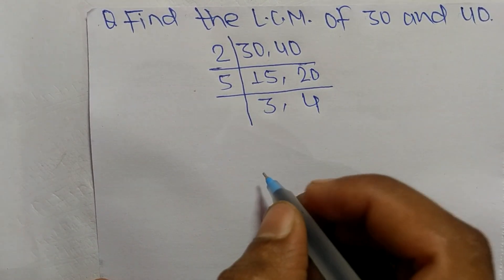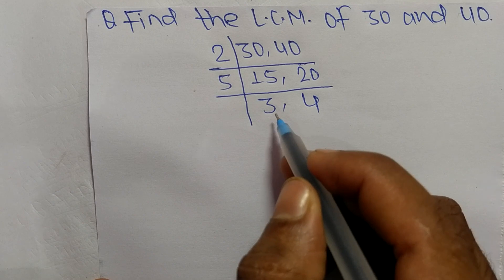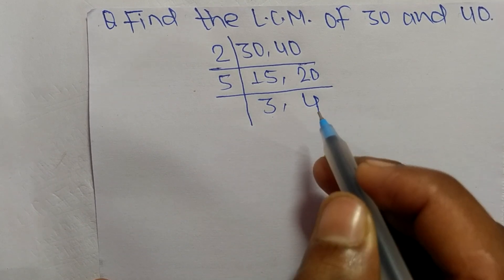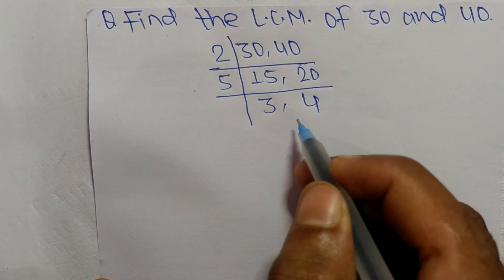So at last we have here 3 and 4, which are not exactly divisible by the same number.